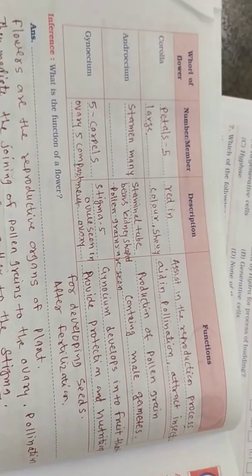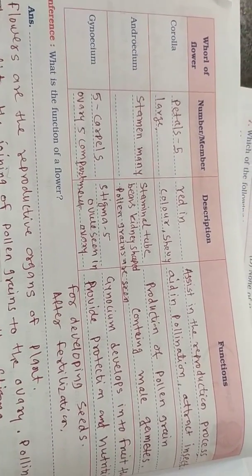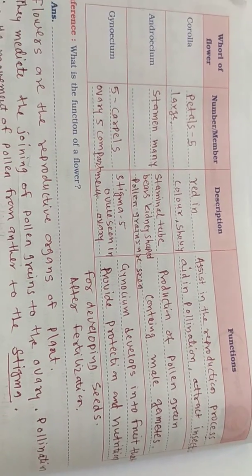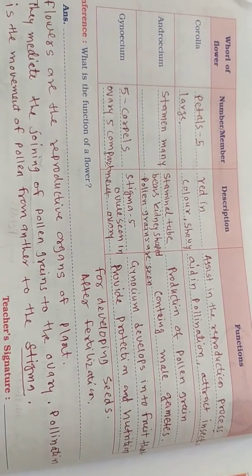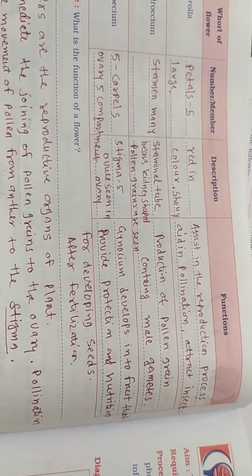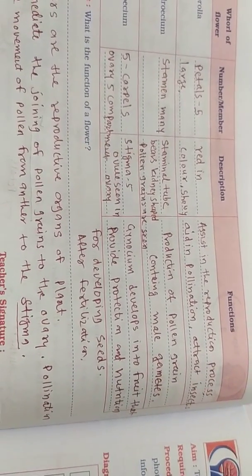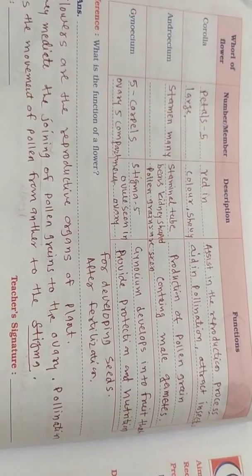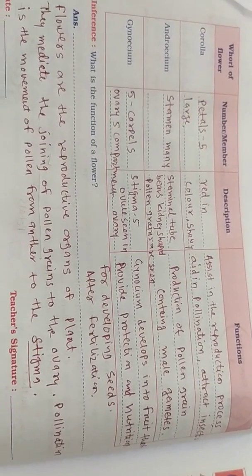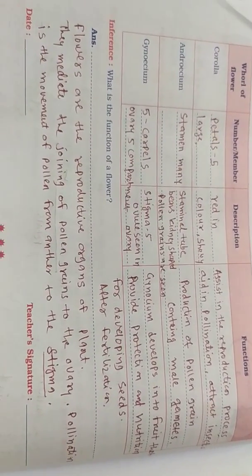The androecium consists of many stamens. Description: it has a staminal tube with kidney-shaped anthers containing pollen grains. The function of the androecium is the production of pollen grains containing male gametes. The androecium is the male part where male gametes are produced.